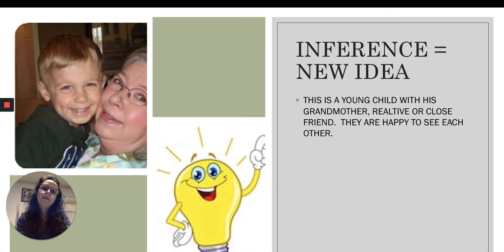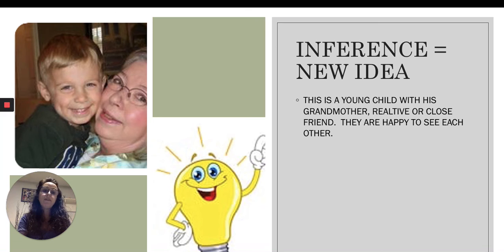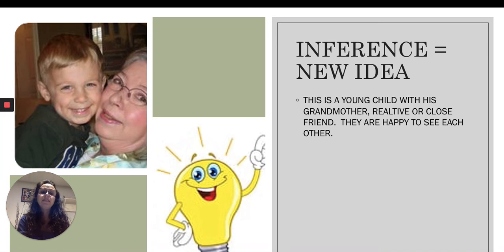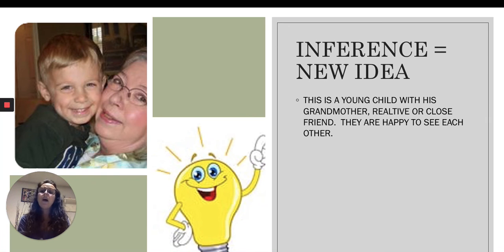So now I'm going to make an inference. My reading voice — the details — plus my thinking voice equals an inference, a new idea. My inference is: this is a young child with his grandmother, relative, or close friend, and they are happy to see each other. The picture did not tell me that — I used those two voices to come up with this new idea.